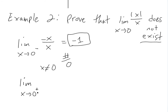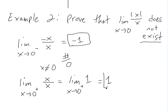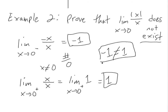From the right side, or positive side of zero, the absolute value of x is just x, divided by x. Since we're not actually dividing by zero — just a number close to zero — we can cancel, and we get one. Negative one does not equal one, so approaching from the left gives negative one and from the right gives one; thus the limit does not exist.